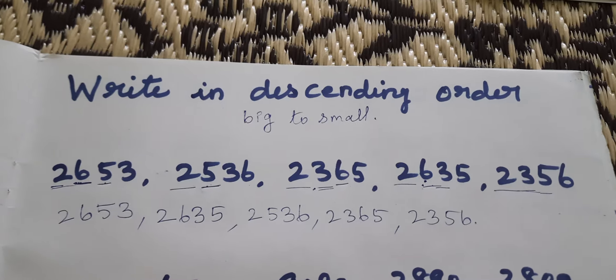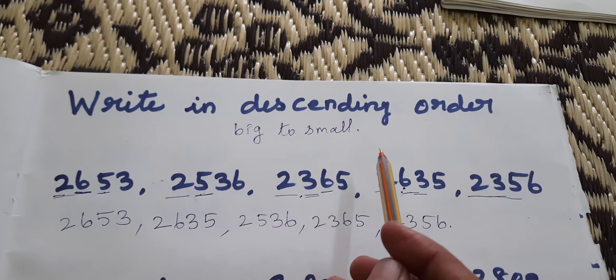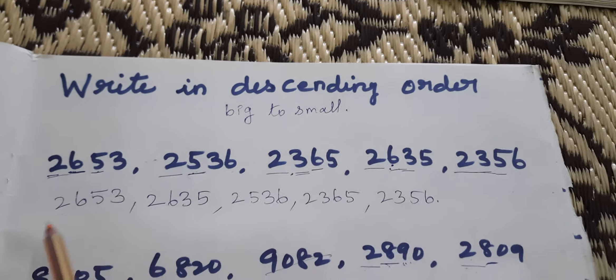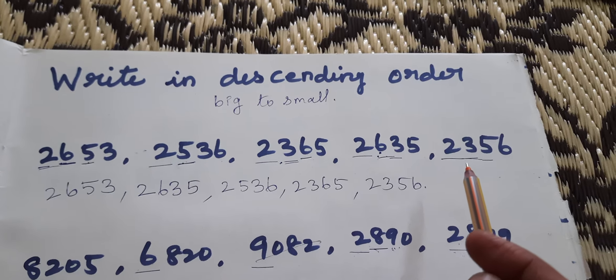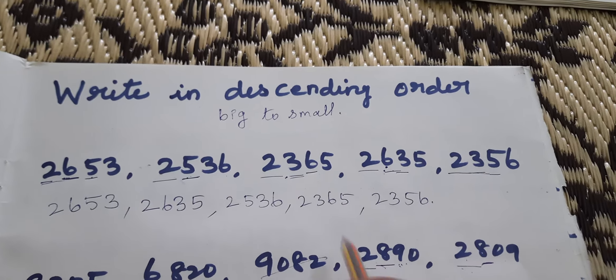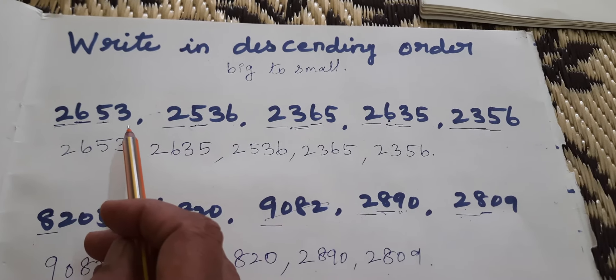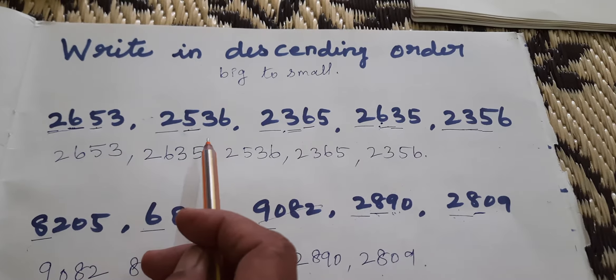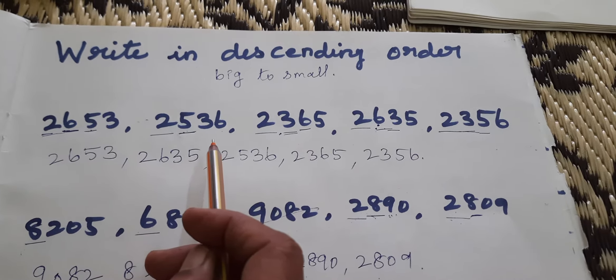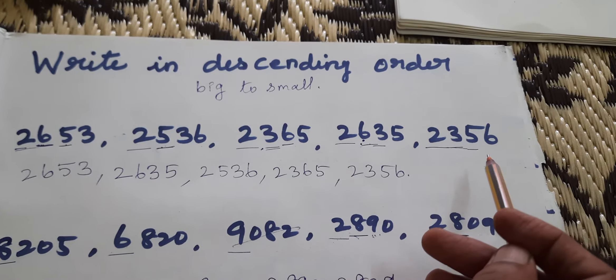Write in descending order. Descending order means big to small. Which is the biggest number? Big to small. The numbers are: 2653, 2536, 2365, 2635, 2356.